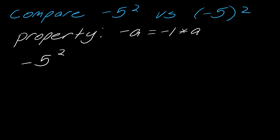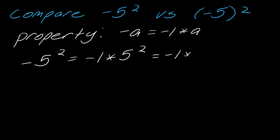If I think about negative 5 squared, and I realize that this property is kind of buried in this, then this is actually the problem negative 1 times 5 squared. Thinking about the order of operations, exponents come first, which means I evaluate 5 squared first. So this is really negative 1 times 25, and the final answer here will be negative 25.